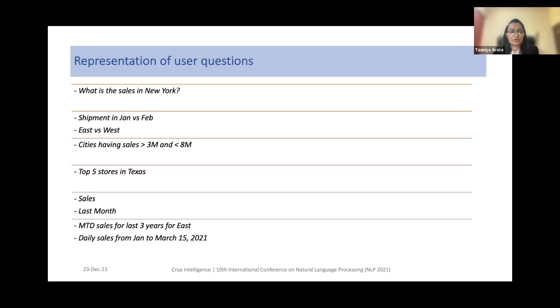Finally, the question can also include complex time periods, like MTD (month-to-date) sales, for last 3 years, for East, or daily sales from January to March 15, 2021.